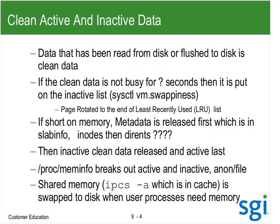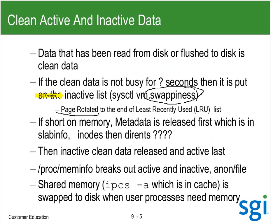Clean data and inactive data: data that's been read from disk or has flushed to disk is clean. Clean data is coherent data. If I take a service interruption, the data is still on disk - the inode might be corrupt, the file system tree might be corrupt, but the data itself was coherent on disk. If that clean data is busy for an unknown amount of time, it's put onto the inactive list. Swappiness is what controls this - how aggressively we rotate the page, put it on a least recently used list, basically age it, and put it on the inactive list.